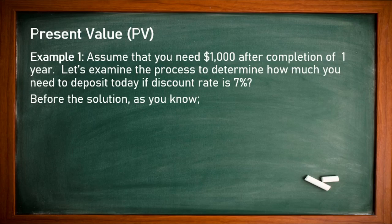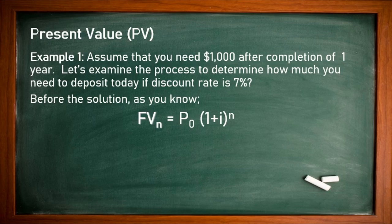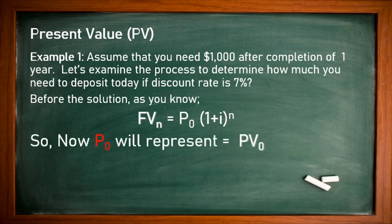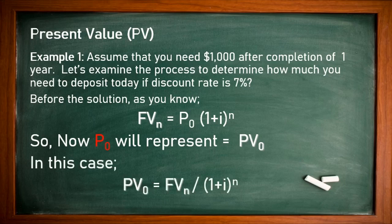So before the solution, as you know, future value is equal to P0 — meaning present value or the principal amount we are going to deposit — in bracket multiplied by (1 + i) to the power n. So P0 represents present value at zero level or beginning year. In this case, P0 is equal to future value divided by (1 + i) to the power n.